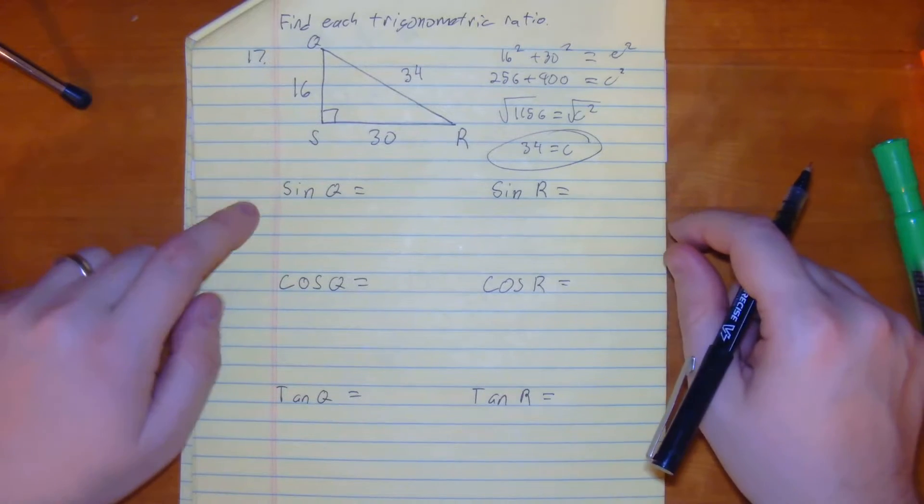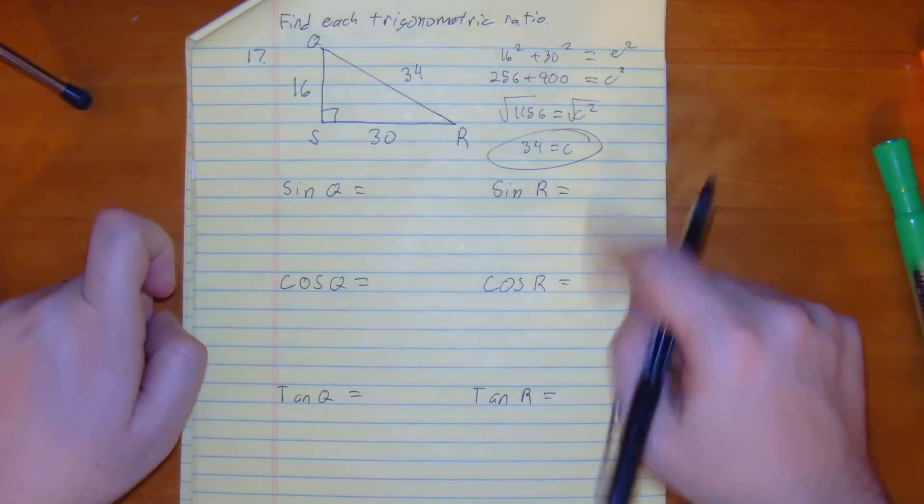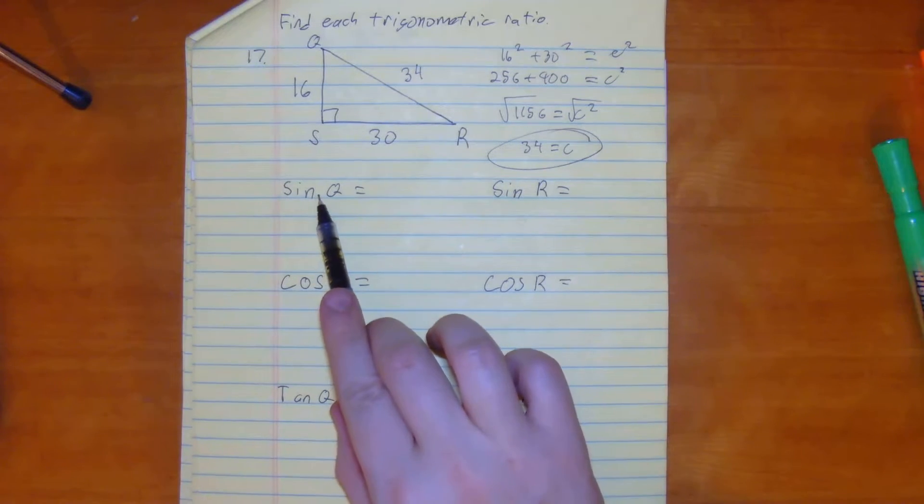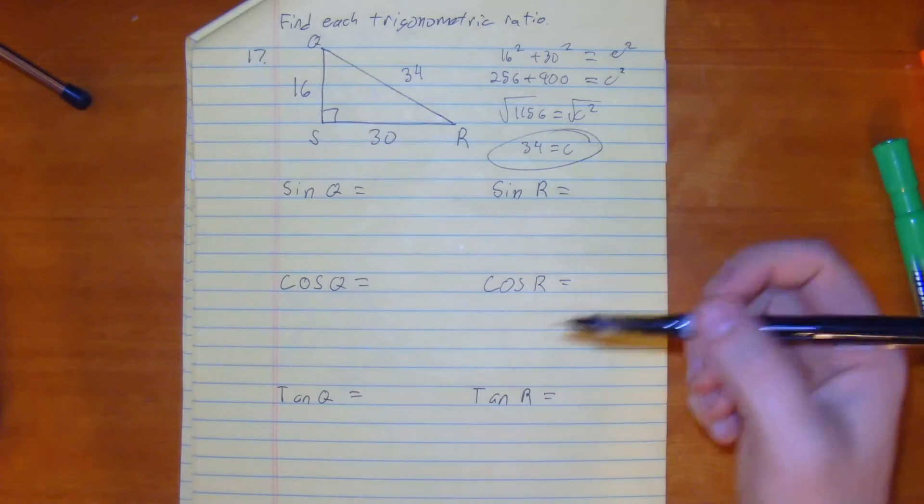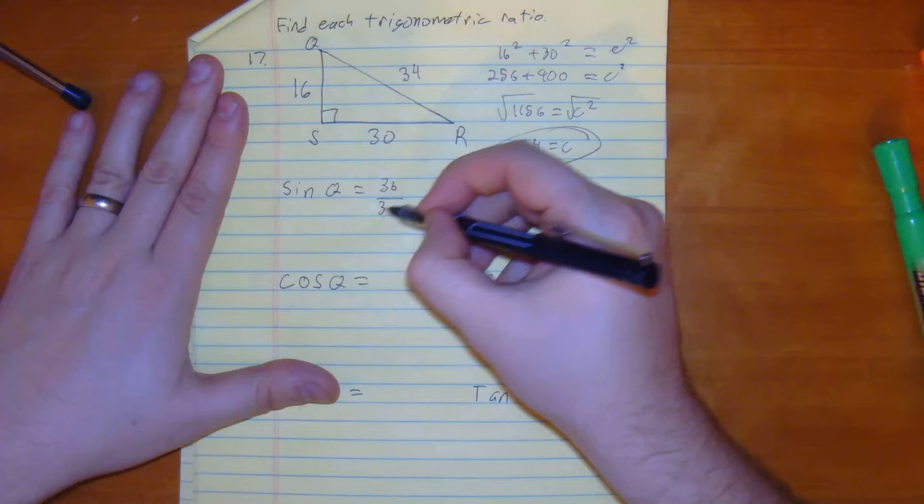So from here, we just need to find sine q, cosine of q, tan of q, and so on and so forth. So, looking at sine of q, we put our pin on q. That means the opposite is 30 over our hypotenuse of 34.